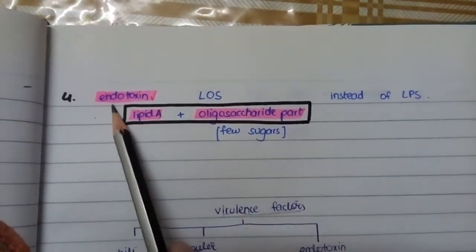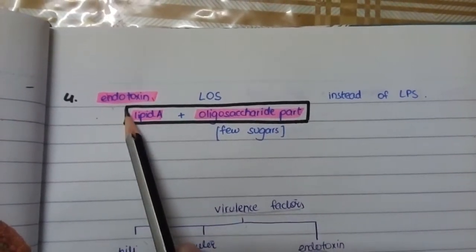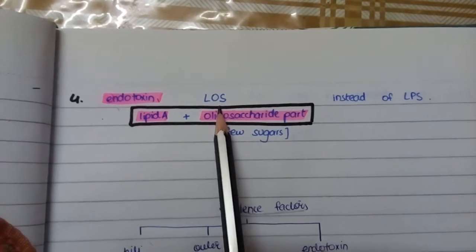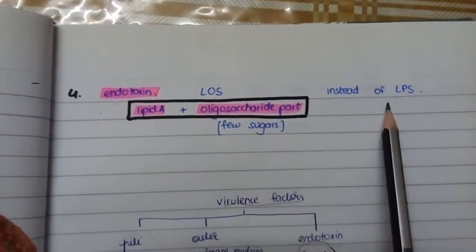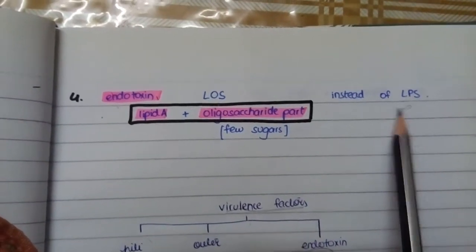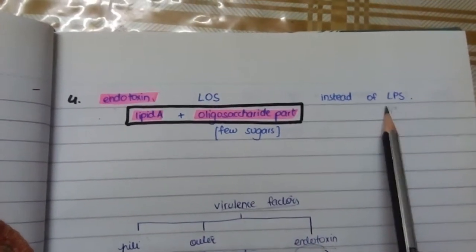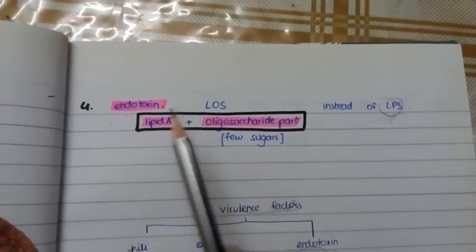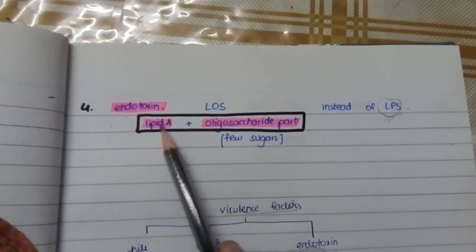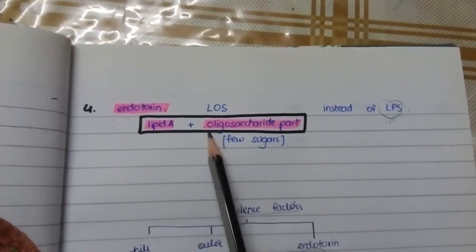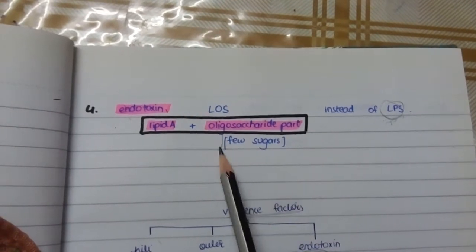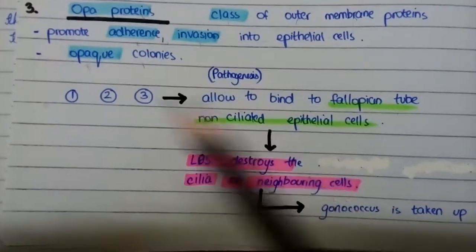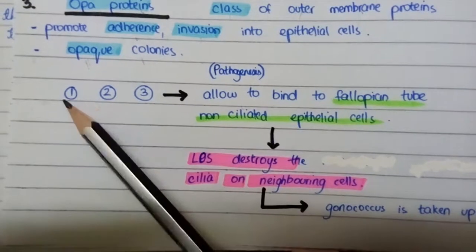The next virulence factor is the endotoxin, which is a lipooligosaccharide rather than the lipopolysaccharide found in most gram-negative bacteria. It is composed of lipid A and an oligosaccharide part comprising a few sugars.